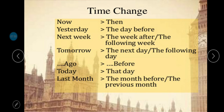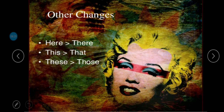When talking about time expressions, 'now' becomes 'then,' 'yesterday' becomes 'the day before,' 'next week' becomes 'the week after' or 'the following week,' 'tomorrow' becomes 'the next day' or 'the following day,' 'ago' becomes 'before,' 'today' becomes 'that day,' and 'last month' becomes 'the month before' or 'the previous month.' Additionally, 'here' changes to 'there,' 'this' changes to 'that,' and 'these' changes to 'those.'